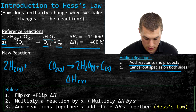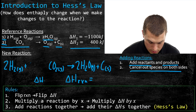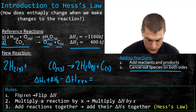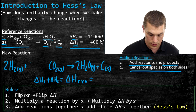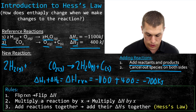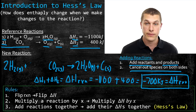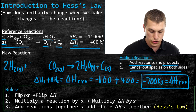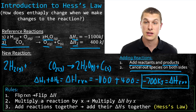Now we can figure out the new enthalpy of reaction. The rule says: add the reactions, add the enthalpies. So our enthalpy of reaction equals delta H1 plus delta H2. Delta H1 is negative 1100 and delta H2 is positive 400, so we do negative 1100 plus 400, which gives us negative 700 kilojoules. That's our new enthalpy of reaction. This is what's technically called Hess's Law — adding together the reactions and just adding together their enthalpies.